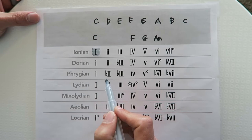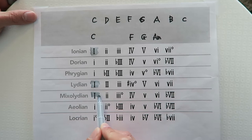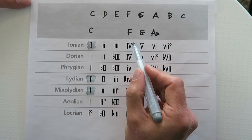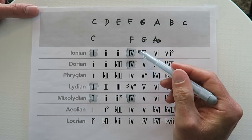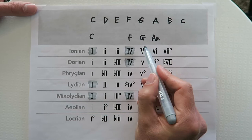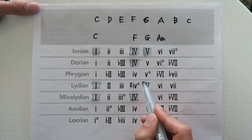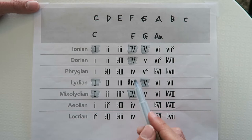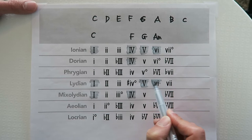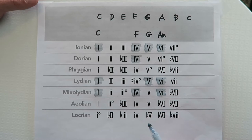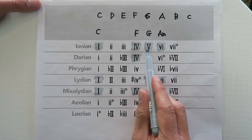Let's figure out the mode. C major is a major one, which appears in Ionian, Lydian, and Mixolydian. F major is a major four, found in Ionian, Dorian, and Mixolydian. So Ionian and Mixolydian both have a major one and major four. G major is a major five, found in Ionian or Lydian — but we already ruled out Lydian. So it's looking like C Ionian. To confirm, the minor six chord also fits Ionian. Of the three modes, Ionian has all four chords: major one, major four, major five, and minor six. It's in C Ionian.